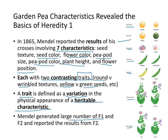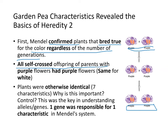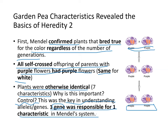Mendel generated a large number of F1 and F2 plants and reported results from F2. First, he confirmed that plants bred true — regardless of color, regardless of number of generations. If you bred purple with purple, you always get purple in all generations. All self-crossed offspring of purple flowers had purple flowers, and same for white flowers. Plants were otherwise identical for the other six characteristics. This was important as a control and key to understanding alleles and genes.